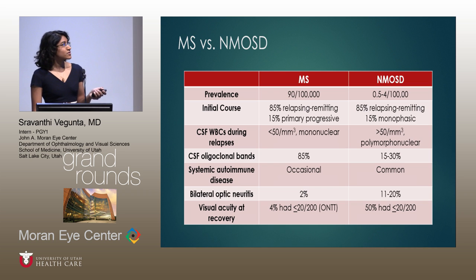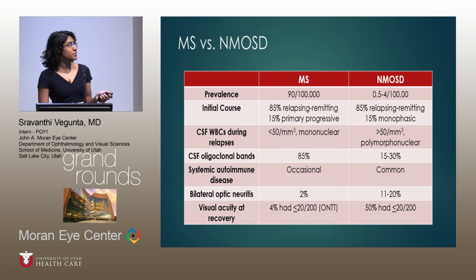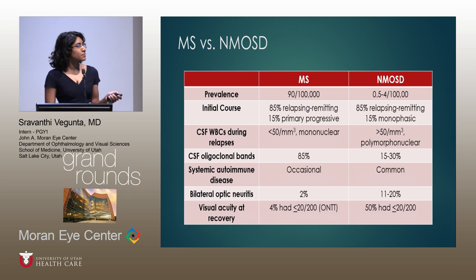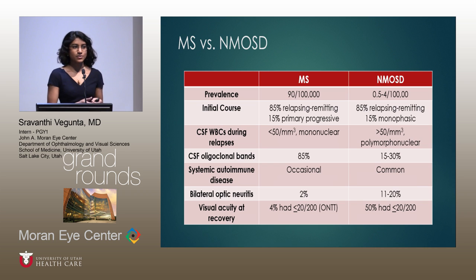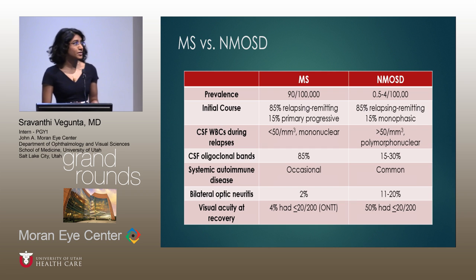This important slide compares MS and NMO spectrum disorders. The prevalence differs greatly — NMO spectrum disorders are much more rare. The initial course is similar, with patients presenting with a relapsing-remitting course of CNS attacks with incomplete recovery. Interestingly, about 15% of NMO spectrum disorder patients present with a monophasic course — one CNS hit with recovery over time. We're finding these monophasic patients are often aquaporin-4 IgG negative, younger, and tend to have positive myelin oligodendrocyte glycoprotein, so they may represent a completely separate disease.